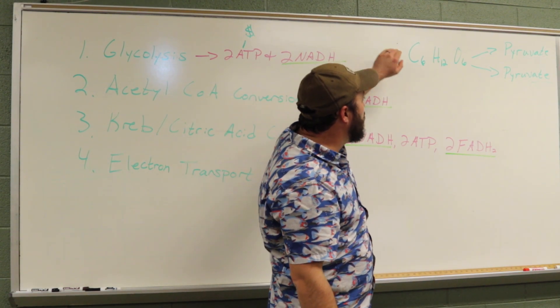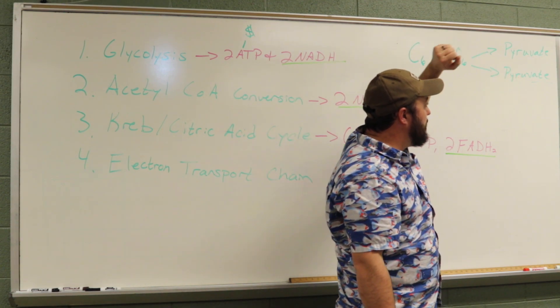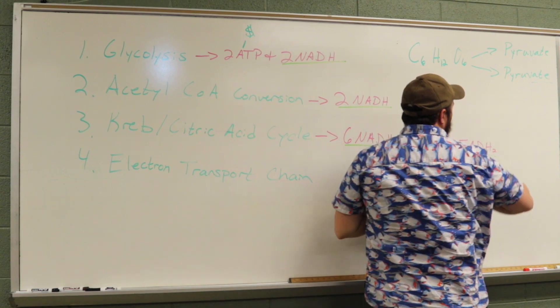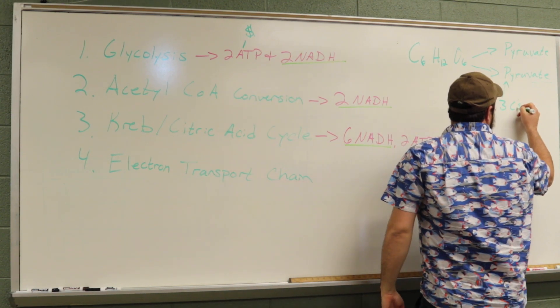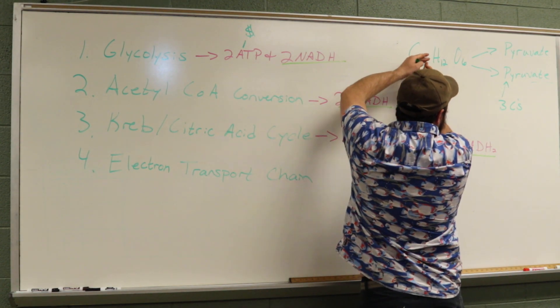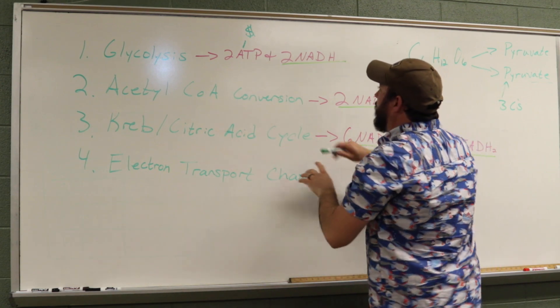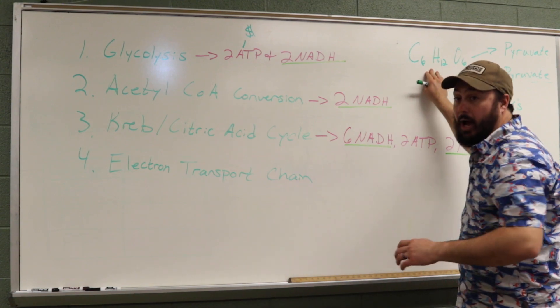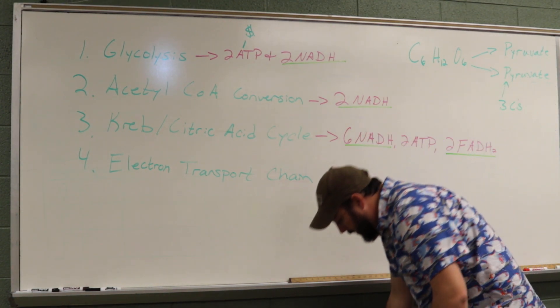We're taking one 6-carbon molecule, and we're splitting it into pyruvate or pyruvic acid. There's two of them. Each one of these has three carbons. So we're still maintaining the same number of carbons. That's really what we're doing in glycolysis. We're inputting glucose, and we're outputting two pyruvate molecules, which are both three-carbon molecules.